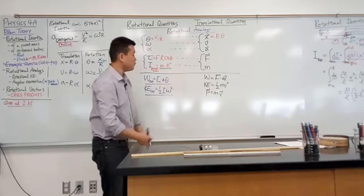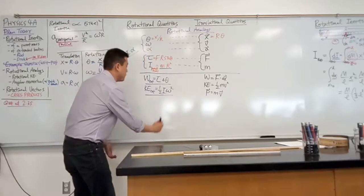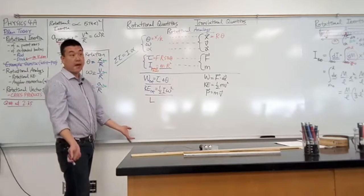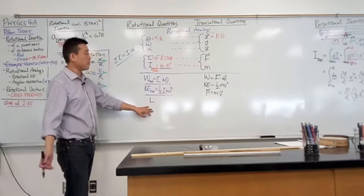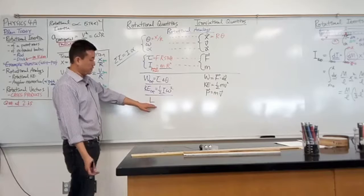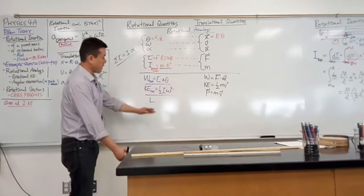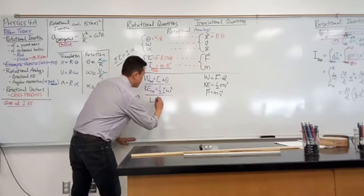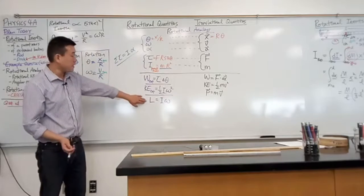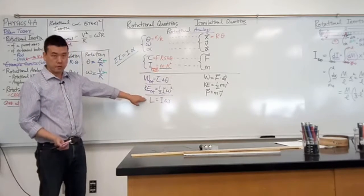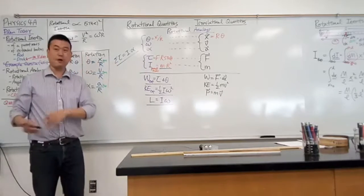Let me finish with what we call angular momentum, using the letter L. We'll describe angular momentum more fundamentally on Thursday. But based on the analogy — since momentum is mass times velocity — angular momentum is approximately rotational inertia times angular velocity. This is true almost all the time, with some exceptions we'll discuss Thursday.